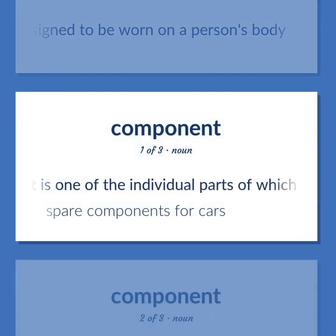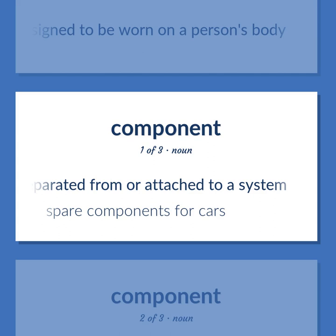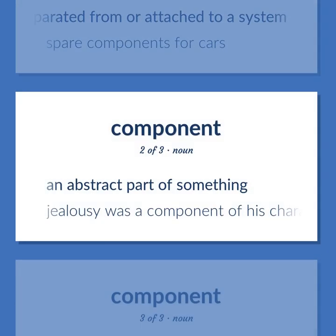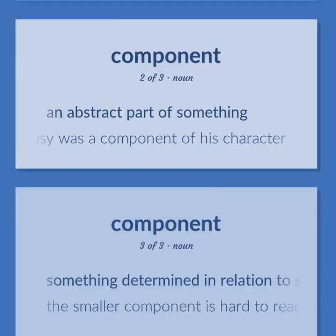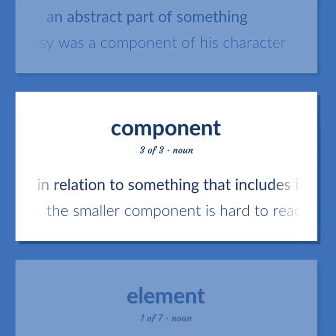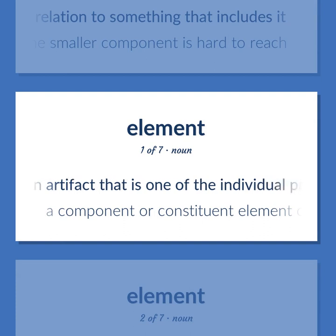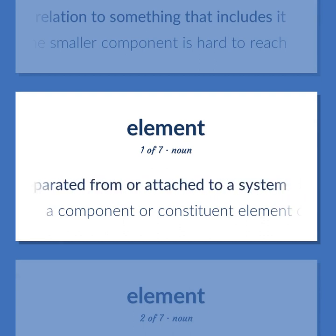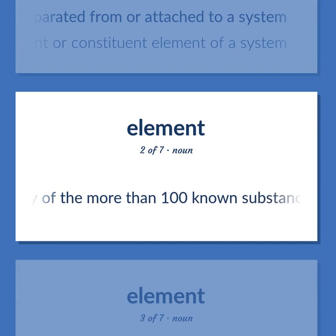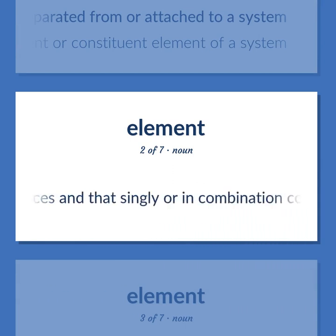An artifact that is one of the individual parts of which a composite entity is made up, especially a part that can be separated from or attached to a system — spare components for cars. An abstract part of something — jealousy was a component of his character. Something determined in relation to something that includes it — the smaller component is hard to reach. A component or constituent element of a system. Any of the more than 100 known substances, of which 92 occur naturally, that cannot be separated into simpler substances and that singly or in combination constitute all matter.